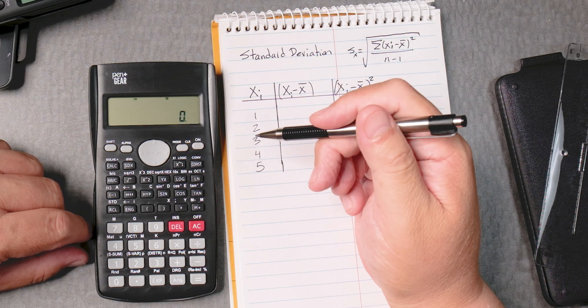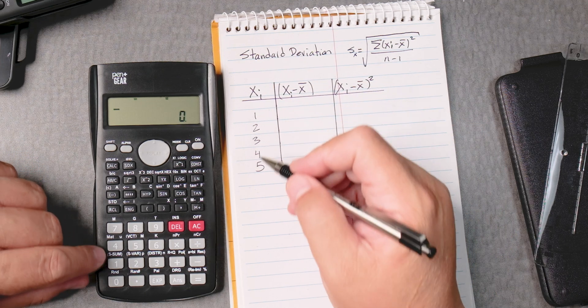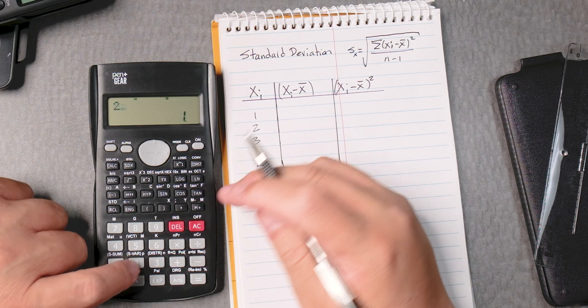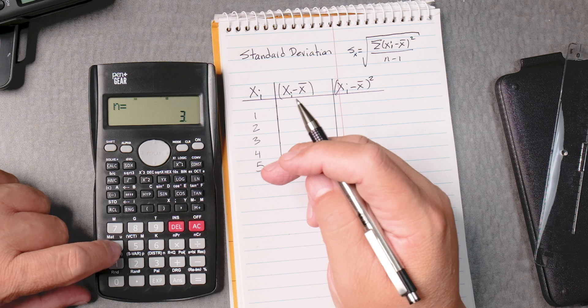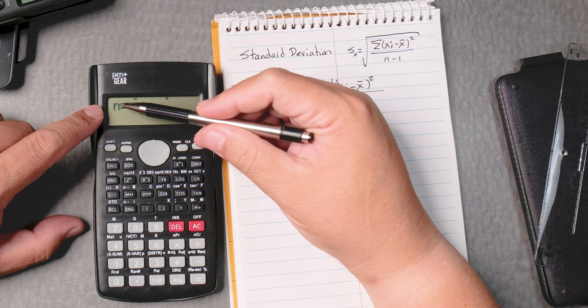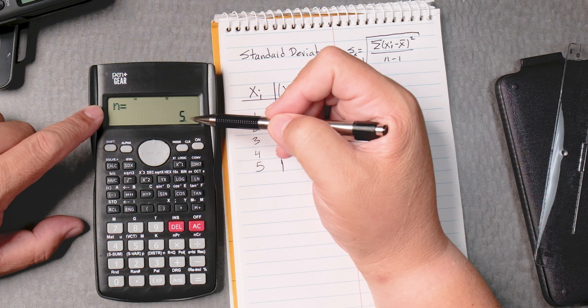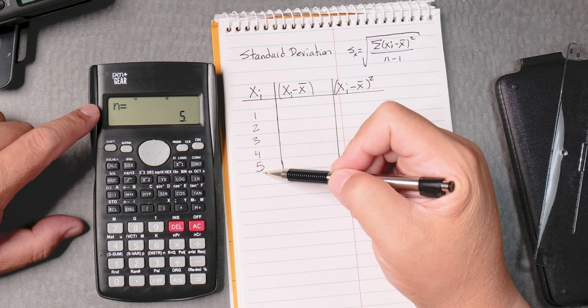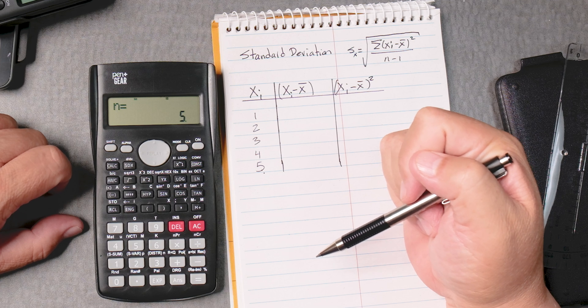Then what we're going to do is enter the data. So we're going to press 1 and plus, 2 and plus, 3 and plus, 4 and plus, 5 and plus. As I'm entering the data, n equals gives me how many data points I've entered. Here it says n equals 5. That's the fifth data point.